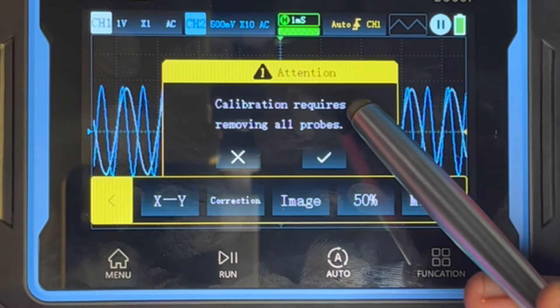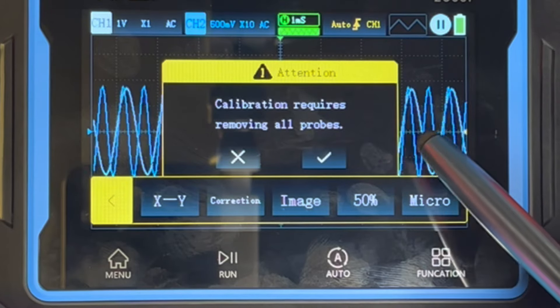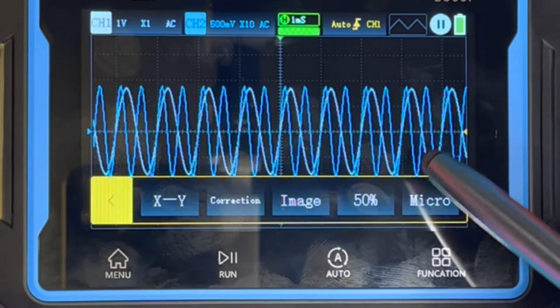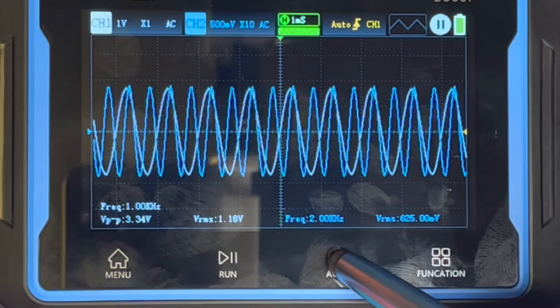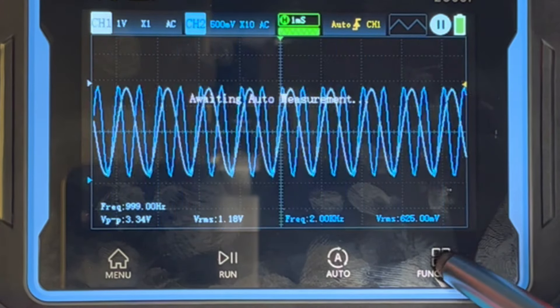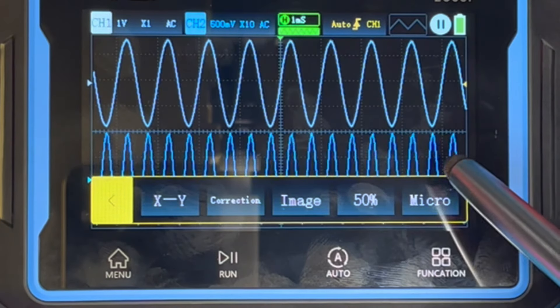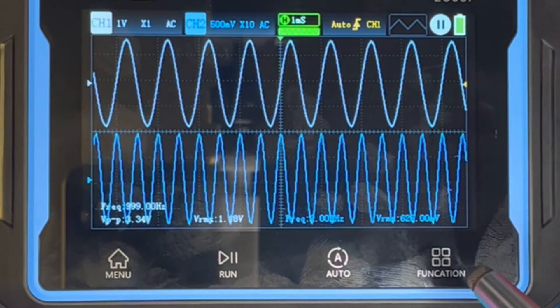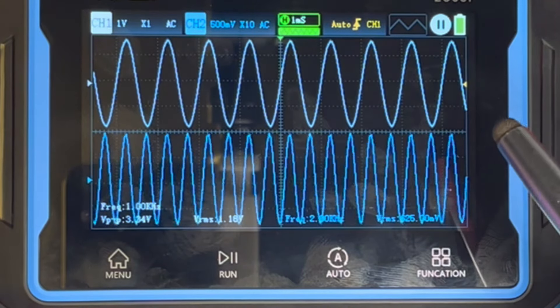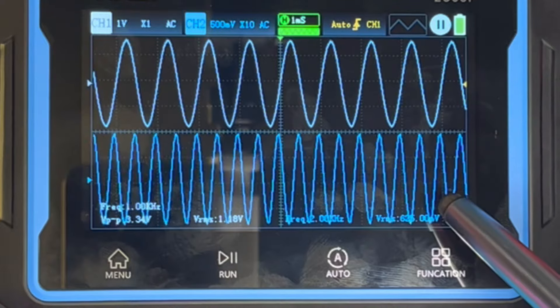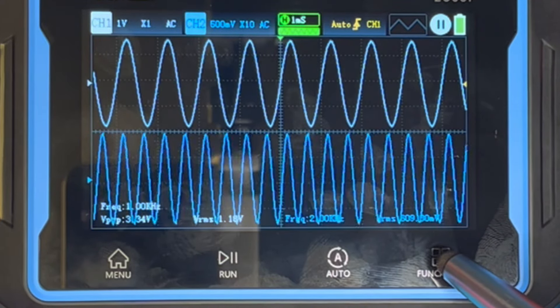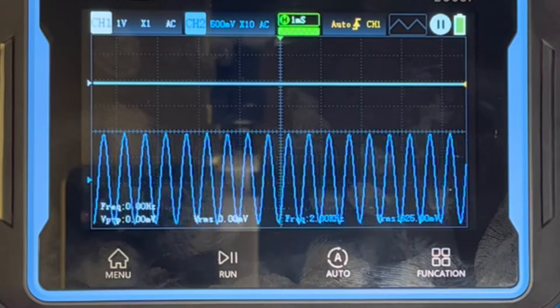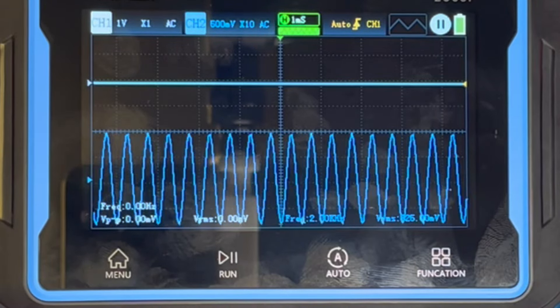Correction - that's calibration. Image, that's recalling saved images. 50% would probably put the two traces at the 50% show of the screen. Yeah, that looks like what it does. And coarse and fine - that just sets the steps for moving waveforms around, whether they move in small steps or large steps. Any other funcations? I think that's about it. Oh, it's so unfortunate they misspelled it on the hardware. That was probably a Friday afternoon job. Well, I think that's pretty much for the oscilloscope.